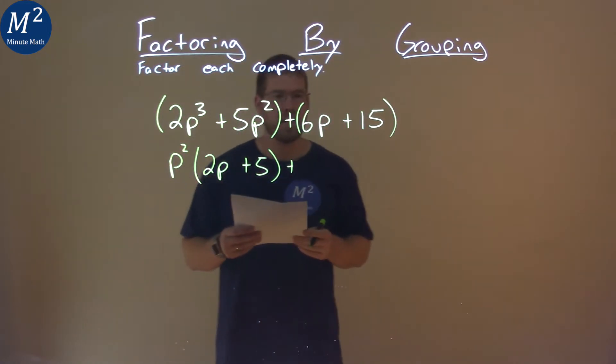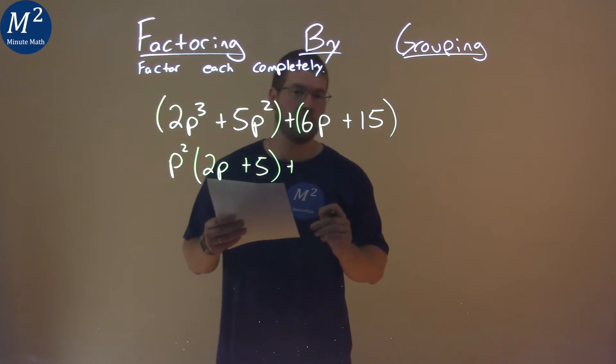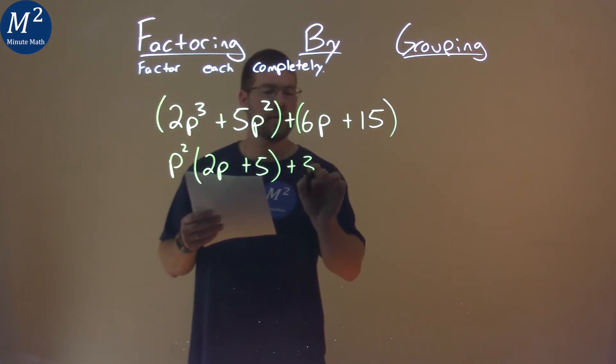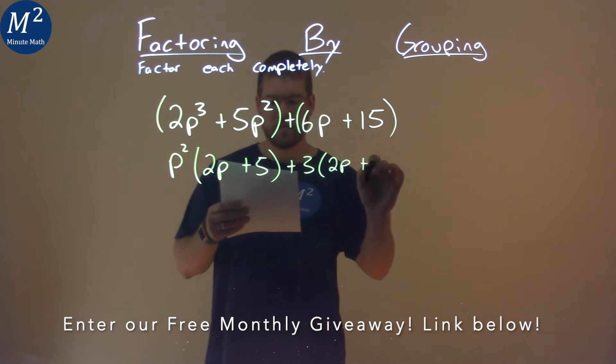The second part, I'm going to do the same thing. A 3 goes into both parts here. Pull out that 3, and I'm left with a 2p plus 5.